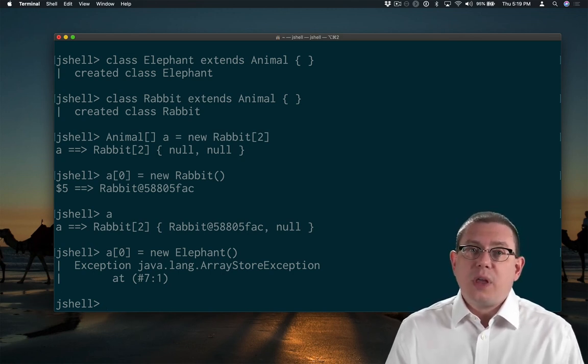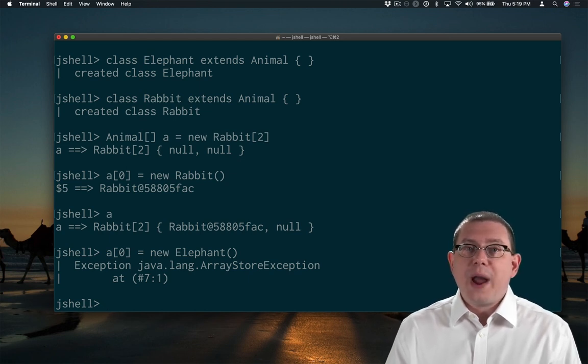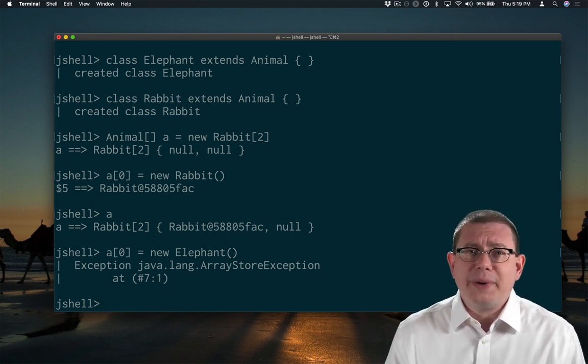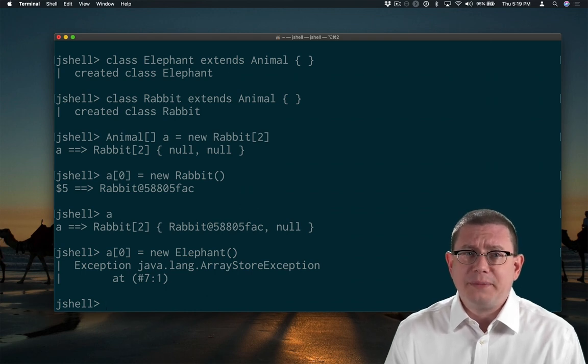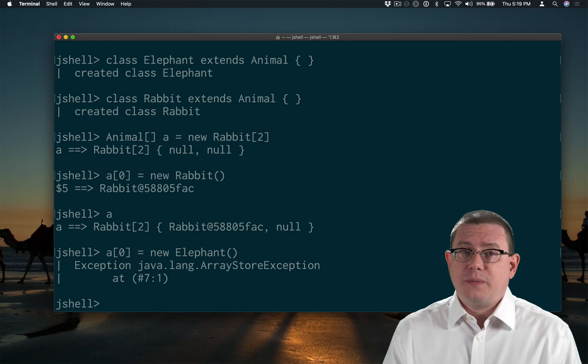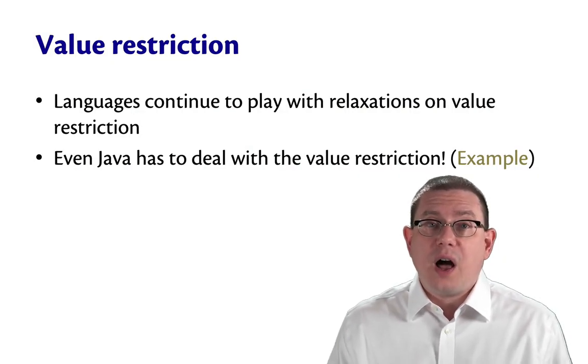So Java disallows this because, hey, maybe someday you're writing a loop over that array, and it's assuming every element of the array is going to be a Rabbit. That would be violated if you allowed it to be an Elephant. You wouldn't want an Elephant to sit on a Rabbit. Poor little Bun-Bun. So Java prevents this with an ArrayStoreException. It's really just the value restriction in another guise.